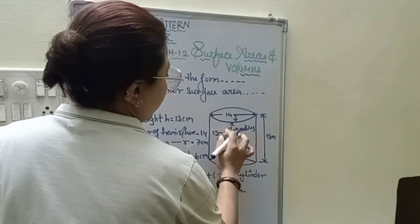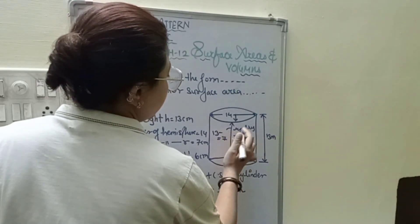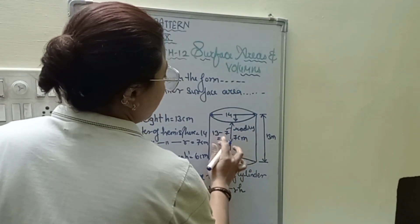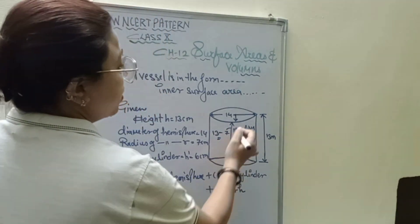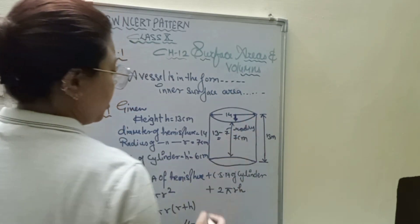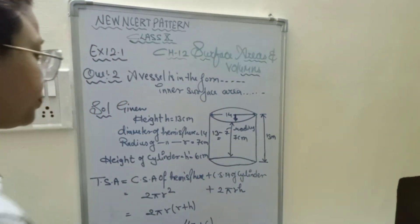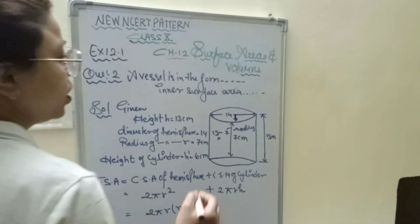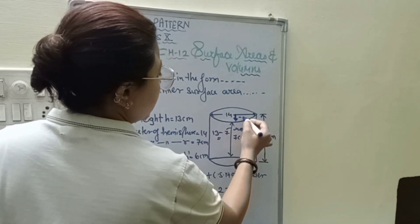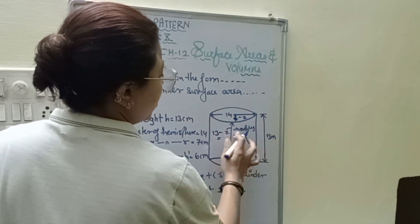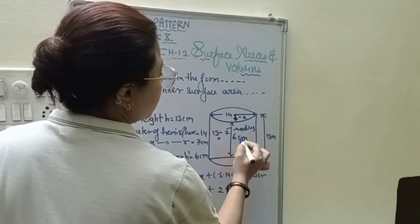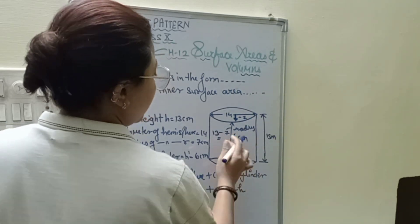What is this height? The radius of the hemisphere is 7 cm. What is this height? The height of the cylinder is 6 cm.